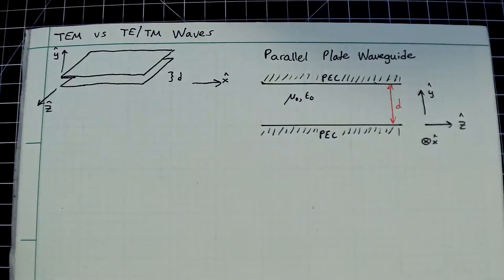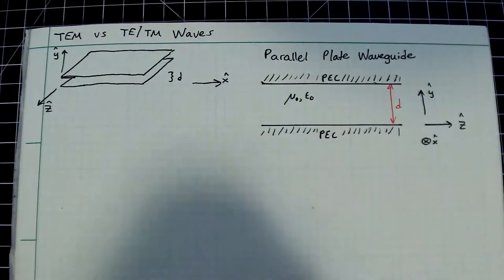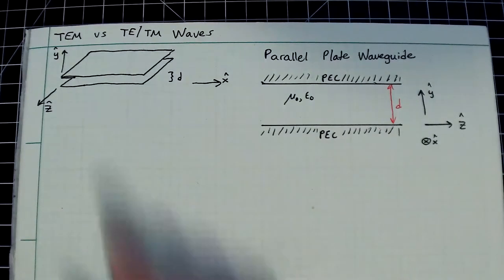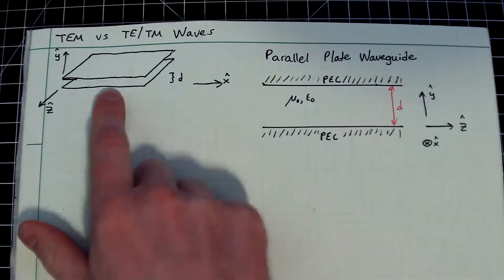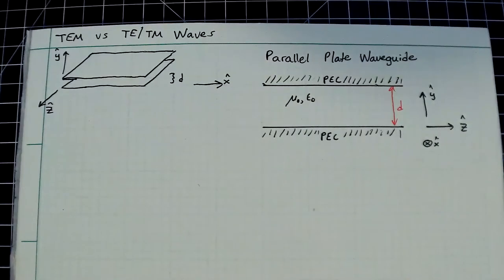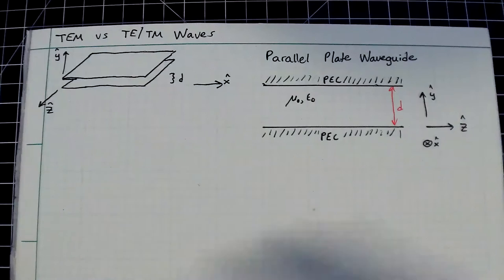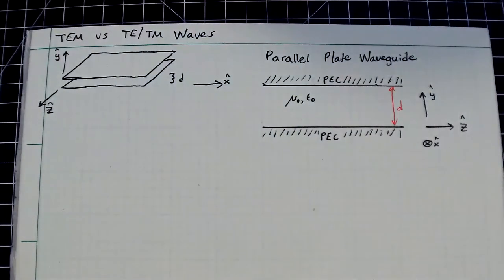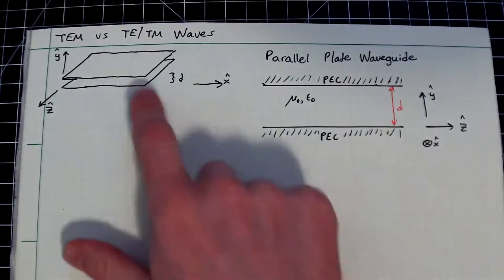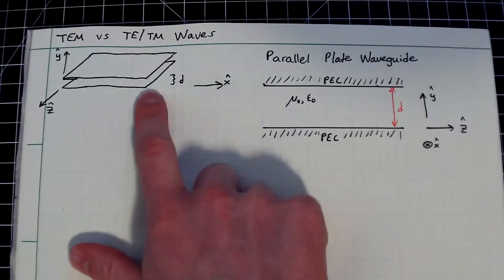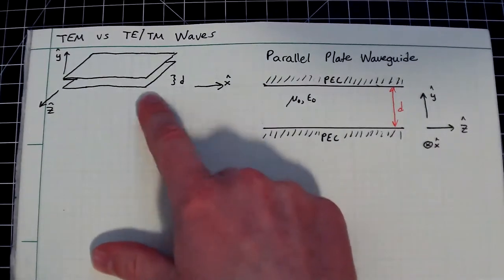Let's talk about TEM versus TE and TM waves. Here I have drawn a parallel plate waveguide — essentially two sheets of metal that are infinite in extent and infinitely thin, separated by some distance D.